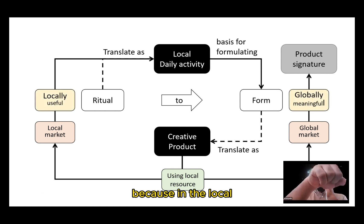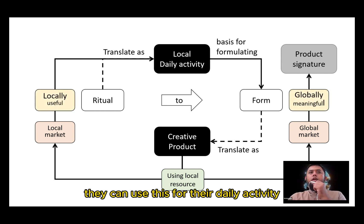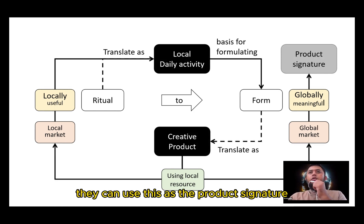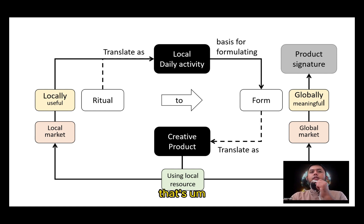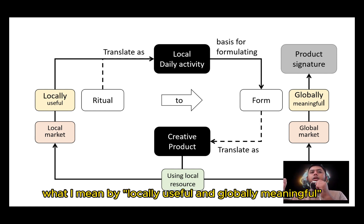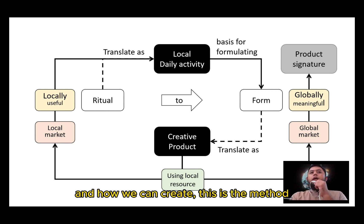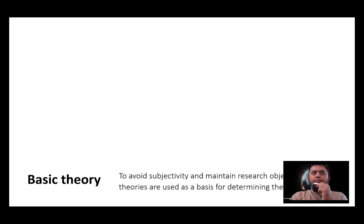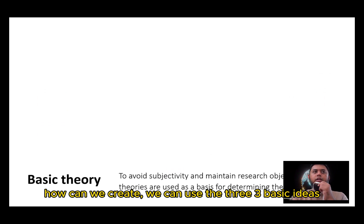It becomes the local market and the global market. In the local context, they can use this for their daily activity. And for the global market, they can use this as a product signature. That is what I mean by locally useful and globally meaningful. This is the method — we can use three basic ideas.